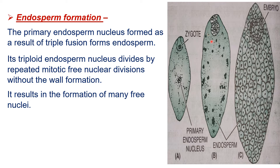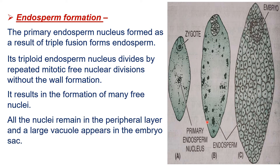This stage is called the coenocyte stage — it is a multi-nucleate structure and takes place in liquid form. When we break open a coconut, the coconut water inside is this multi-nucleate structure. When the endosperm develops and many nuclei are formed, gradually cell walls begin to form around all the nuclei, and it comes into solid form — this is what we eat as coconut kernel or copra.